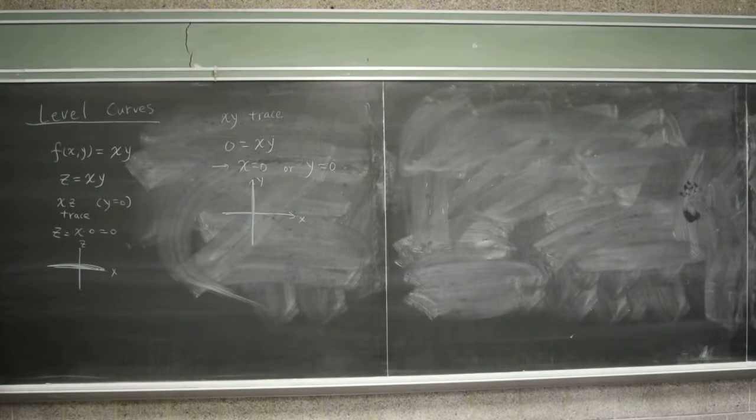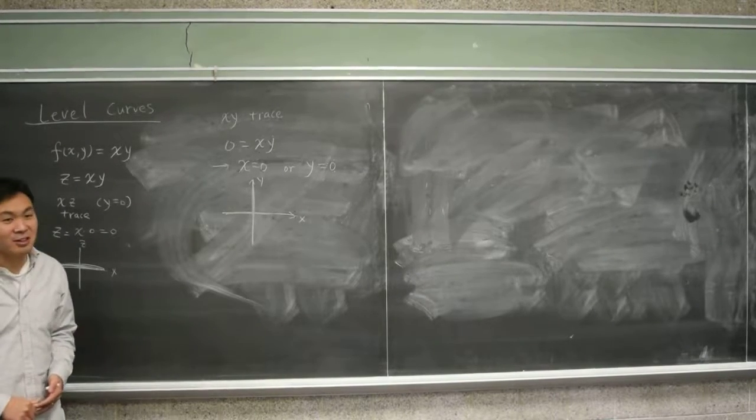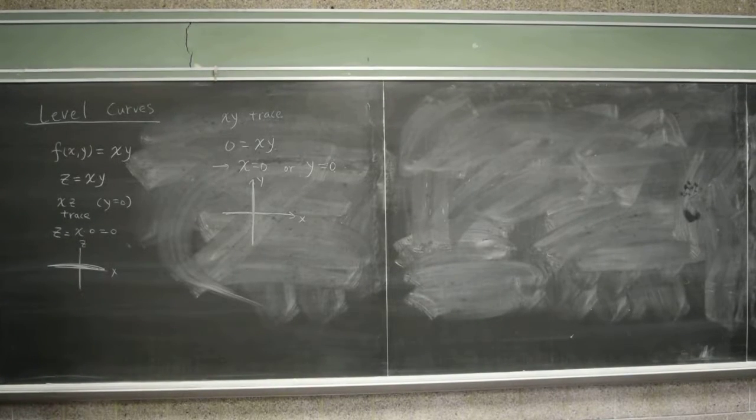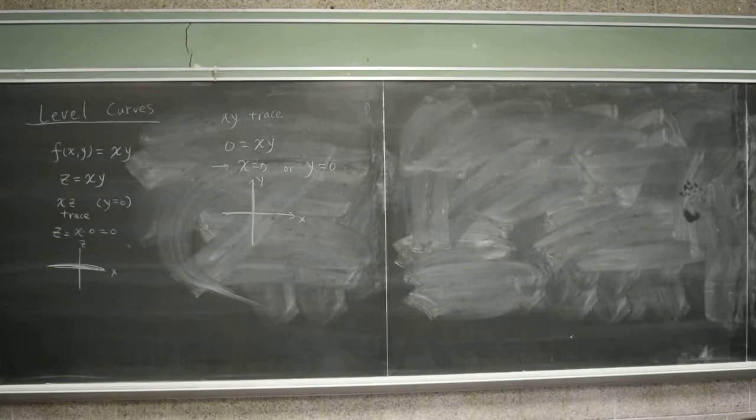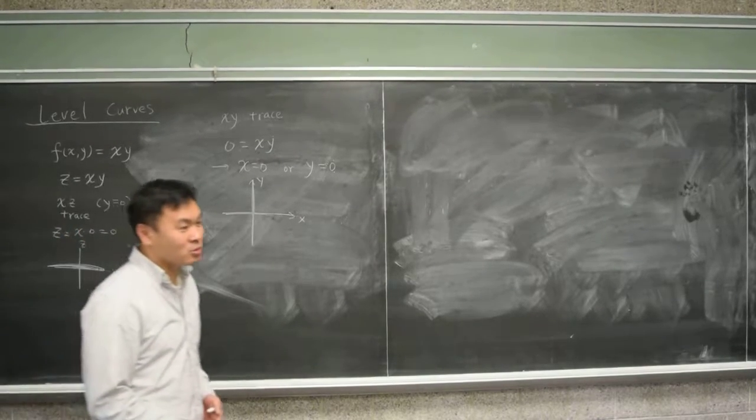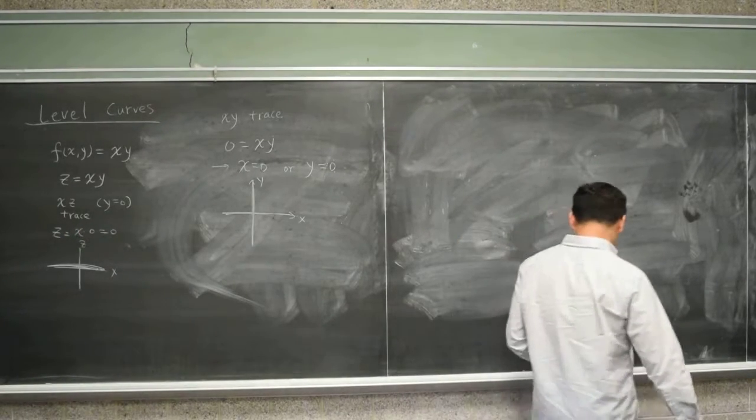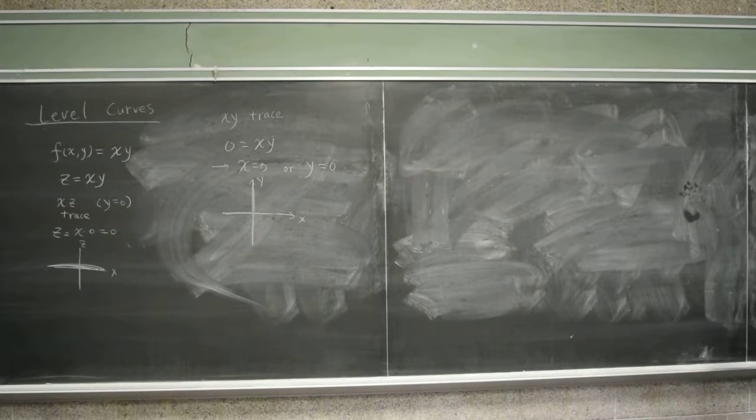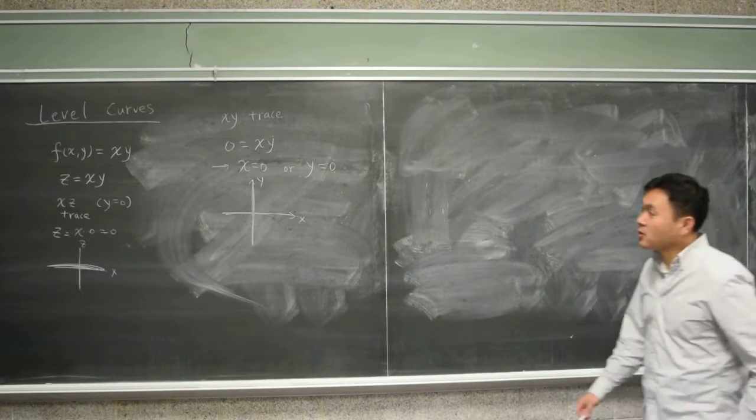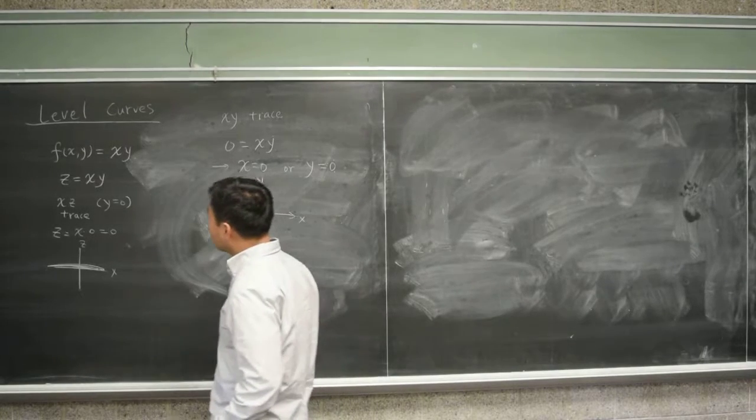So in this case, none of the traces really give me any good idea of what this surface looks like. And therefore, for this question, it's absolutely necessary to know the level curves. Not just one, you probably want more than one, you need several. That's why I want to use the level curves to figure out the graph of f(x,y) equals xy.